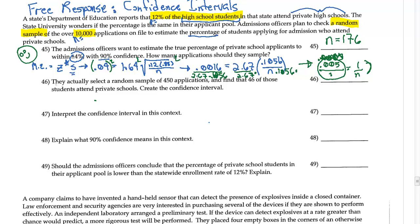Now, they actually select a random sample of 450 applicants. Why did you make me go through it? Never mind. And find that 46 of those students attend private school. Create a confidence interval. Well, this is pretty straightforward with the calculator. This is literally what you want to do.